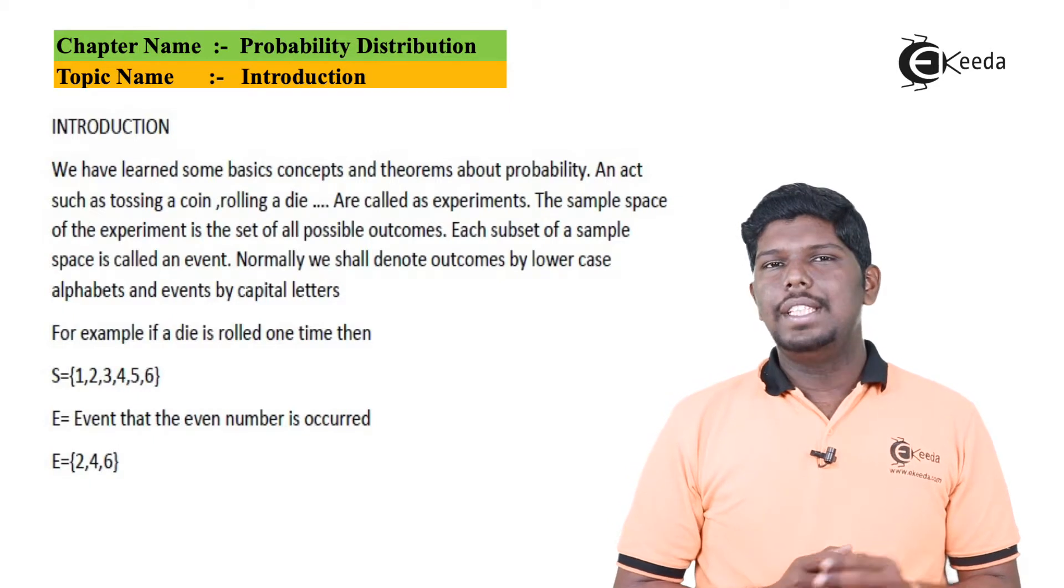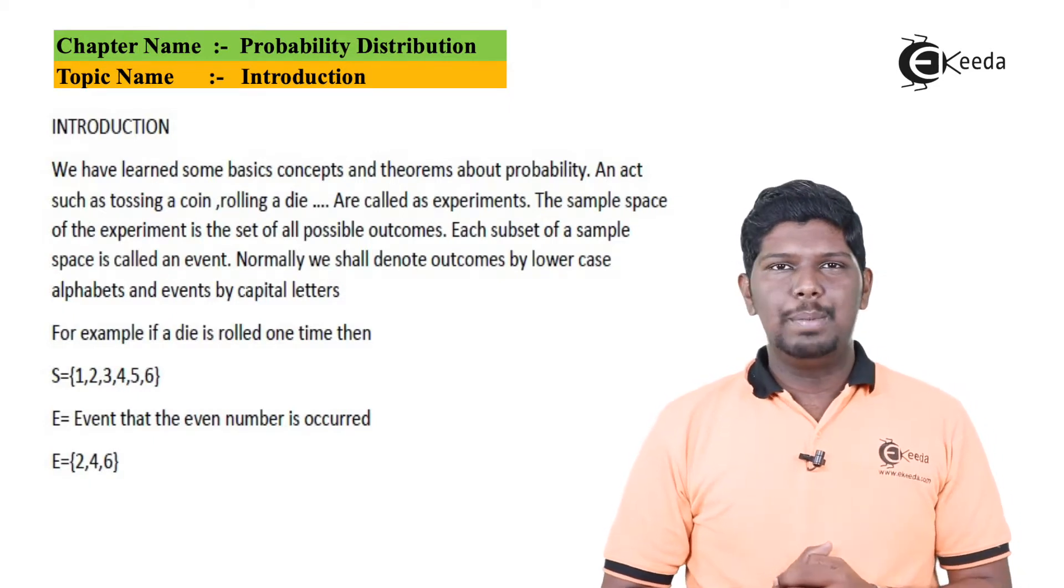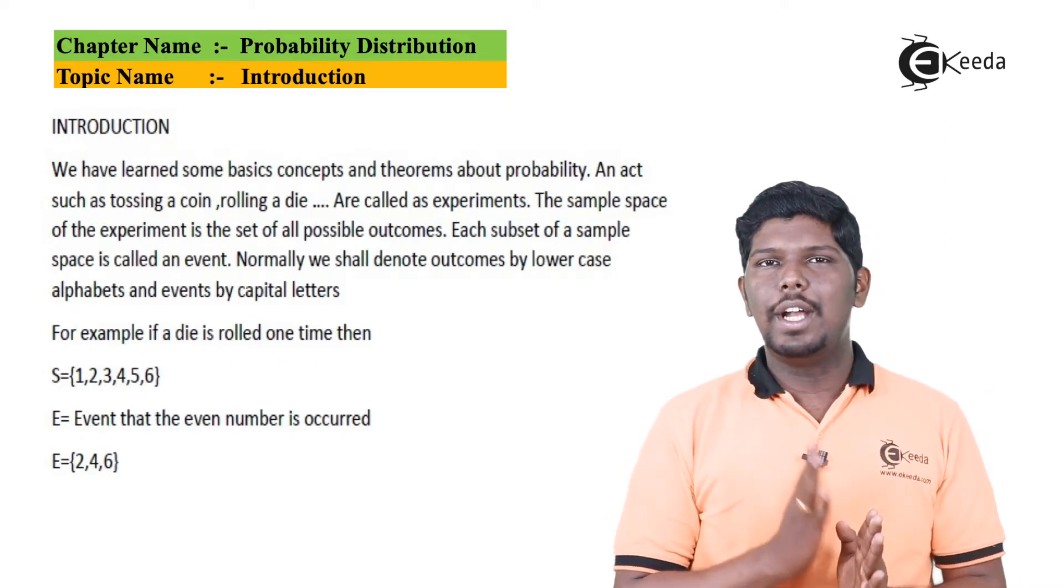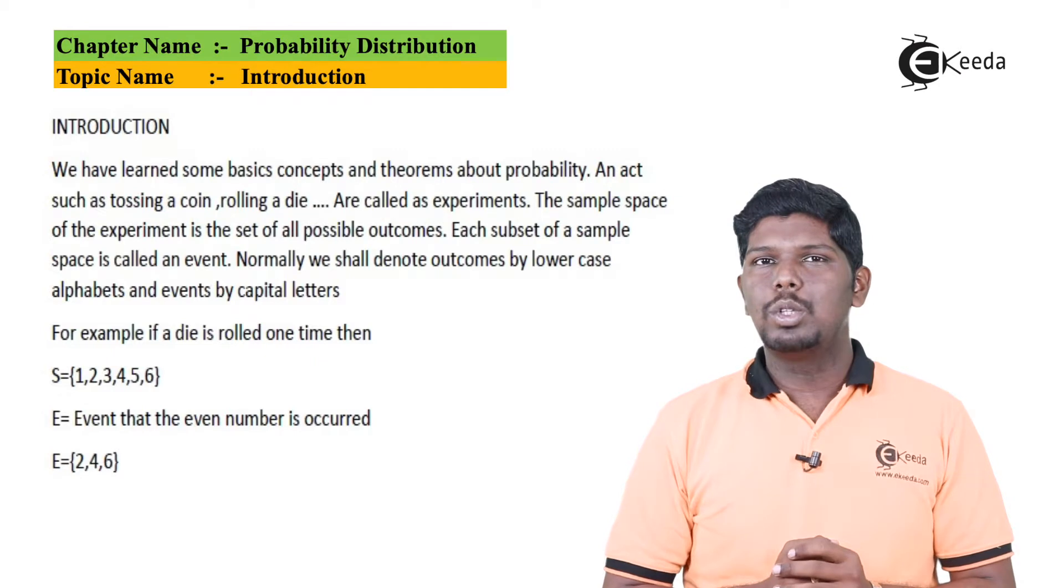For example, if I say a die is rolled, then let S be its sample space. So we have capital S is equal to from numbers 1 to 6, that is 1, 2, 3, 4, 5, 6, which are the outcomes of a die.